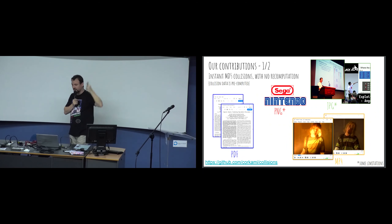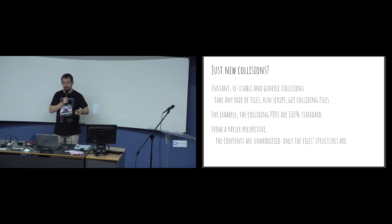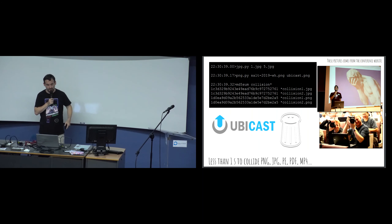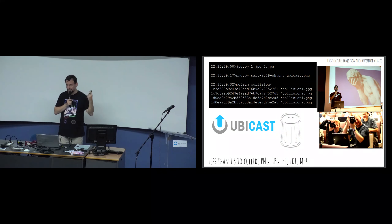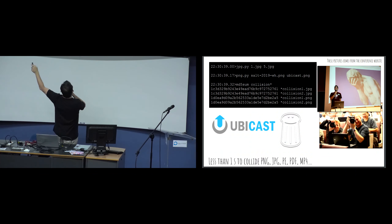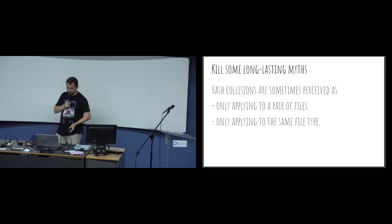These are not new crypto attacks - they are new exploits of existing attacks, and they are reusable and generic. They're on my website. Colliding PDFs are 100% standard. The file we're viewing now is actually colliding - I'll reveal that later. It works with files taken directly from websites. These two PNGs have the same MD5, and these two JPEGs have the same MD5. The computation was instant because I pre-computed what was needed on the cryptographic level, then it's just file manipulation.